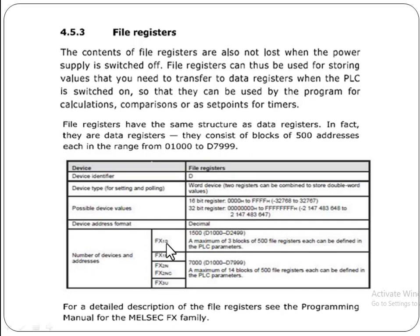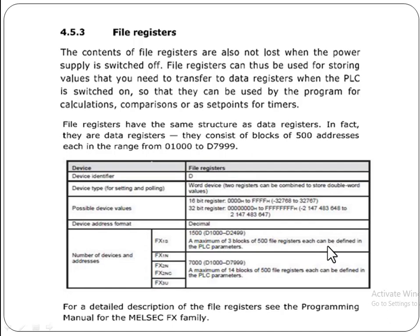For example, FX1S has 1500 file registers, D1000 to D2499, a maximum of three blocks of 500. This number consists of three blocks of 500 file registers, each of which can be defined in the PLC parameters.